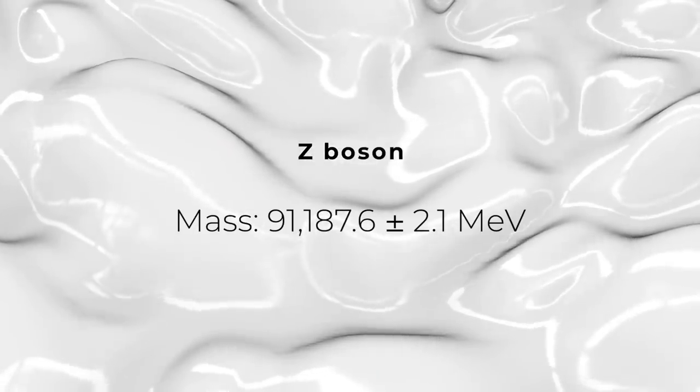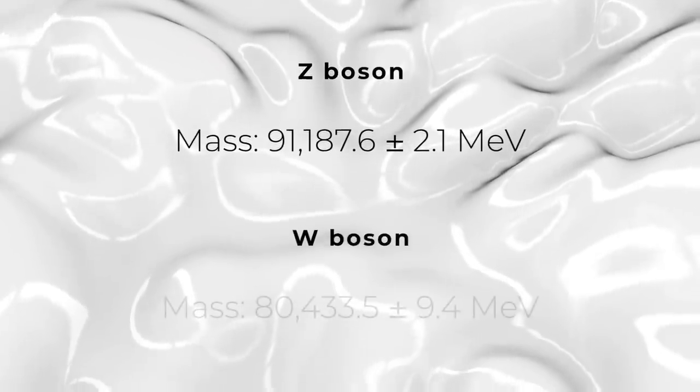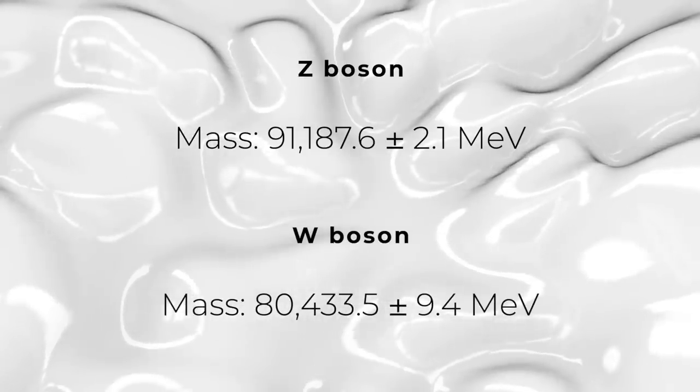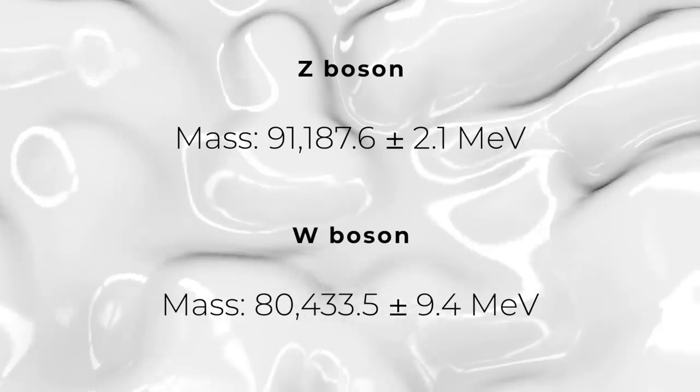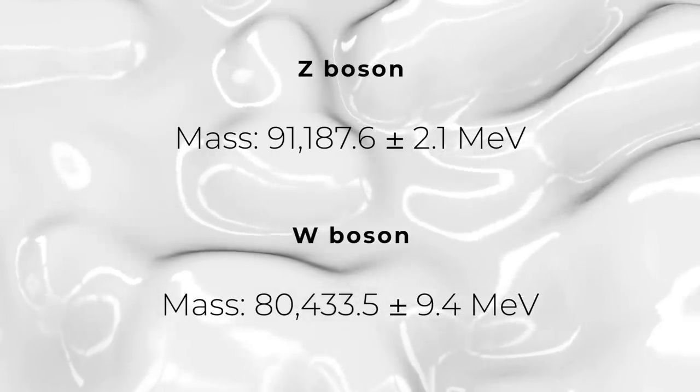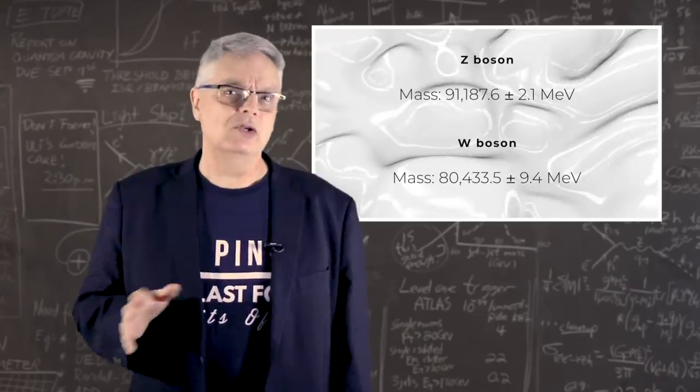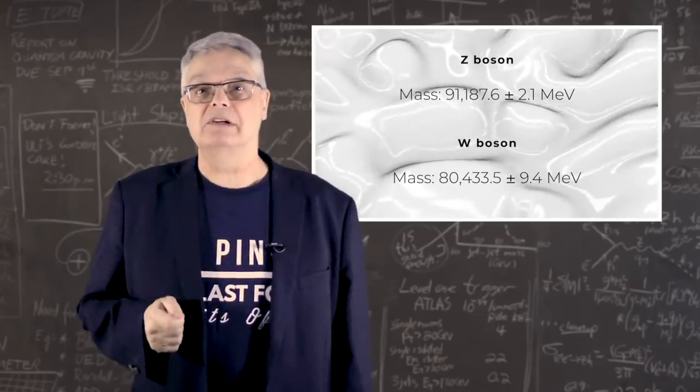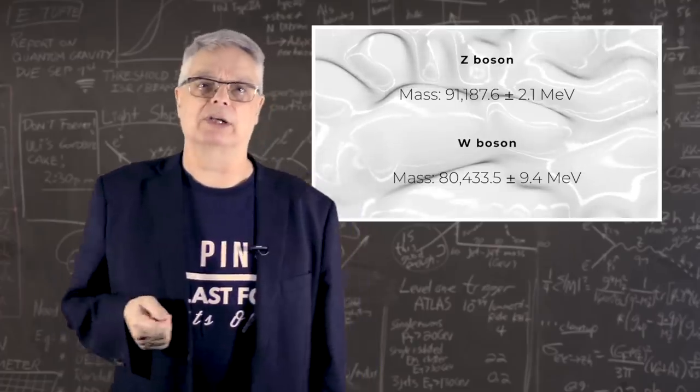The recent announcement by Fermilab is a measurement of the mass of the W boson with an uncertainty of 9 MeV. Now, that's much worse than has been achieved for the Z boson, but before this recent measurement, the best uncertainty anyone could achieve for the W boson was about 20 MeV. So this is a huge improvement and it's part of a multi-year effort to measure the mass of the W boson as precisely as we have the Z boson.